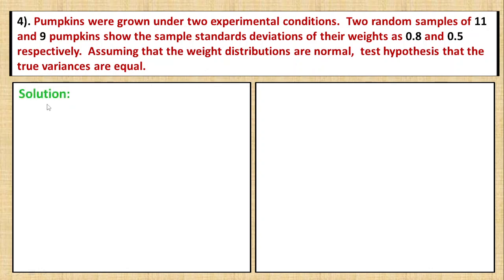First, let's look at the solution. Given: the first sample size n₁ is 11, second sample size n₂ is 9. The first sample standard deviation s₁ is 0.8, and the second sample standard deviation s₂ is 0.5.